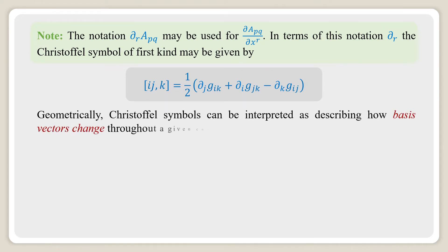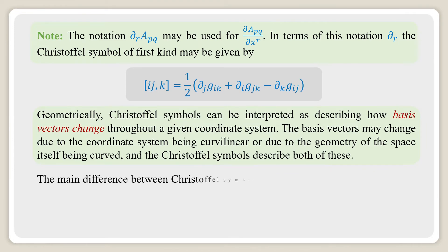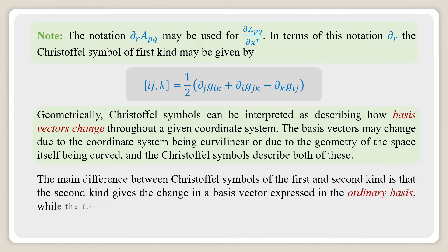Geometrically, Christoffel symbols can be interpreted as describing how basis vectors change throughout a given coordinate system. The basis vectors may change due to the coordinate system being curvilinear or due to the geometry of the space itself being curved, and the Christoffel symbols describe both of these.